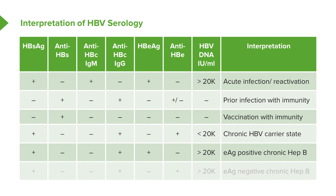Finally, e-antigen negative chronic hepatitis B: here you find anti-HBe. The viral count or HBV DNA will still be greater than 20,000. Interpretation is where your focus should be first, then look at the various markers, and then go back to the graph to understand the timeline.